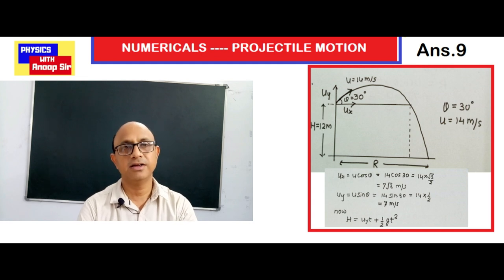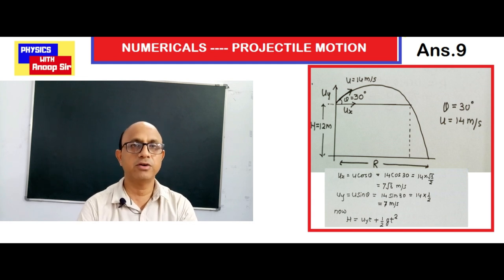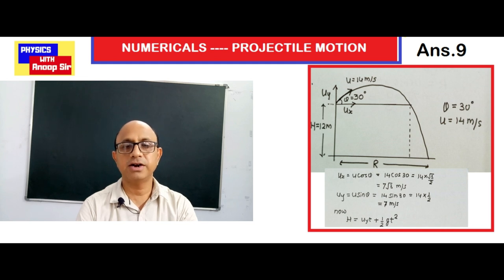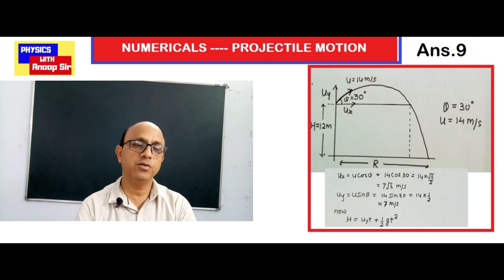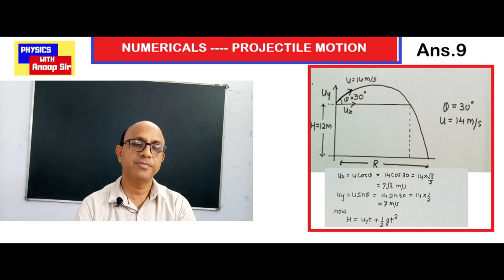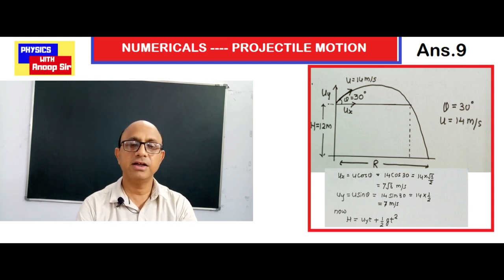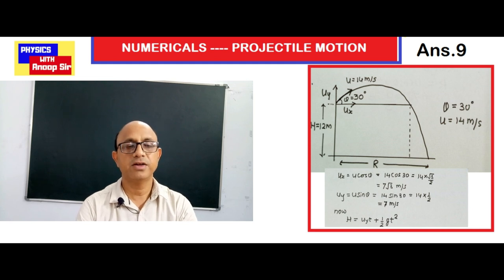As usual, we find the horizontal and vertical components: u_x = u cos30° = 14 cos30° = 7√3 meter per second, and u_y = u sin30° = 14 × sin30° = 7 meter per second.